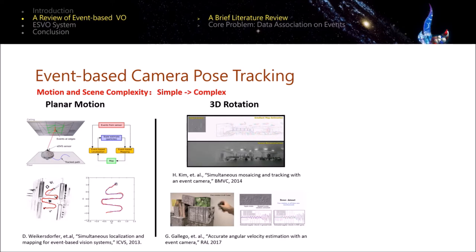Hanme Kim et al. proposed a probabilistic filtering-based method which predicted the rotation of the event camera while recovering a gradient map that induced the event observations. Another representative work was proposed by Guillermo et al., which is a method based on the idea of motion compensation. It aligned events under the estimated three-dimensional rotation model.